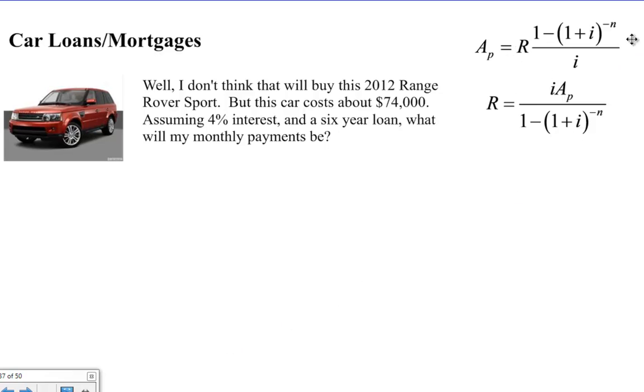Again, we had this formula and now we're going and doing this formula here and it's just the reciprocal of this fraction times both sides which cancels out and gives us the R equals I times the present value of the annuity divided by 1 minus 1 plus I to the negative N.